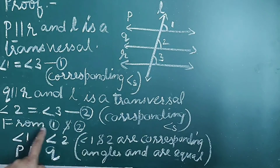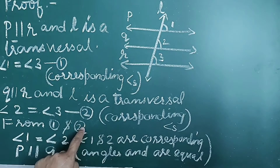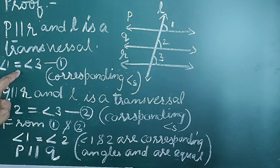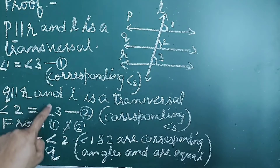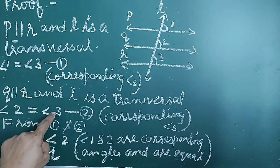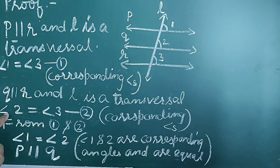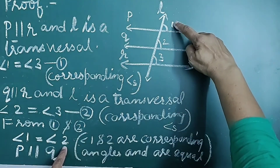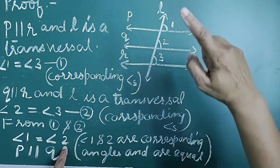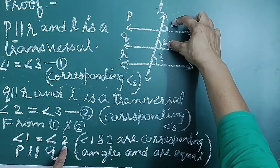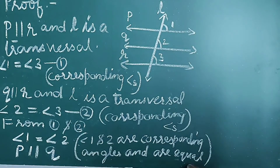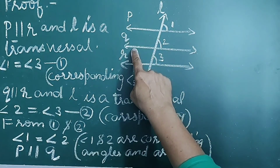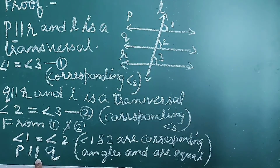Now, from equations 1 and 2, the RHS parts are equal — both equal angle 3. Therefore, the LHS parts are equal: angle 1 equals angle 2. From the figure, angle 1 and angle 2 are a pair of corresponding angles and are equal. Therefore, line P is parallel to line Q. Hence proved.